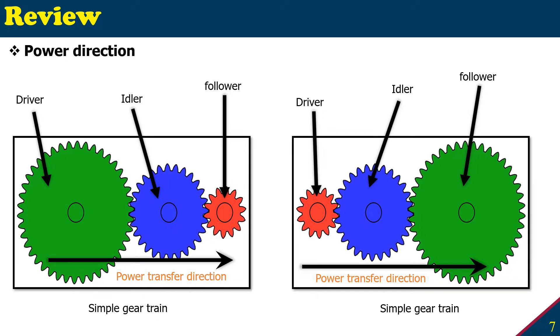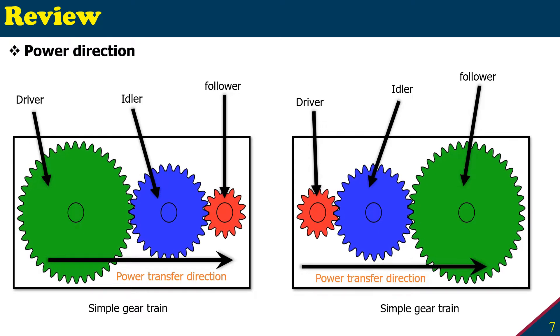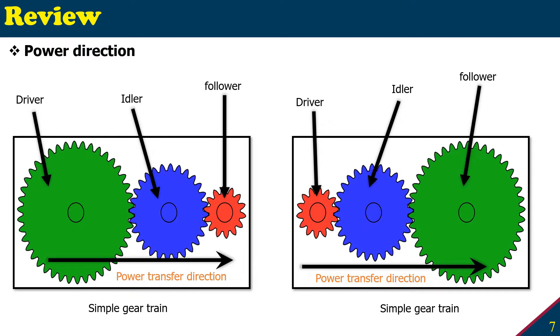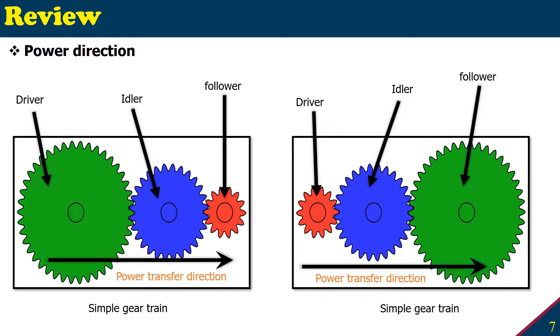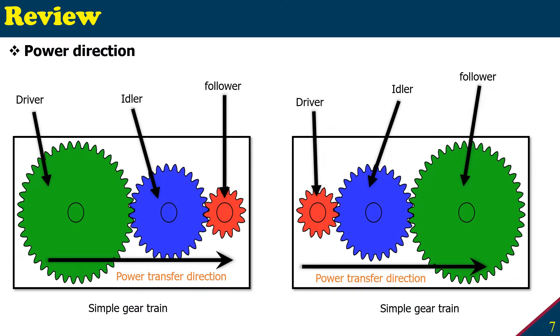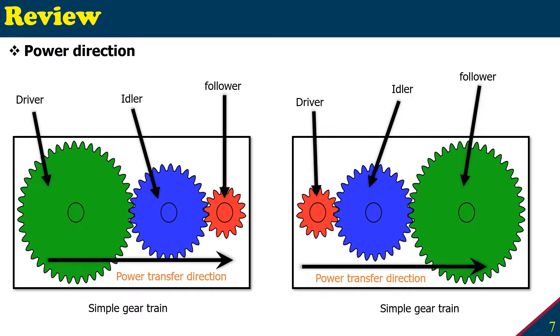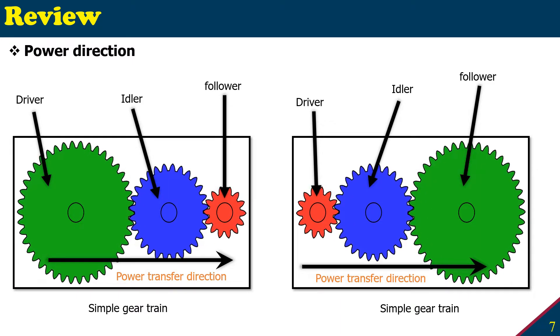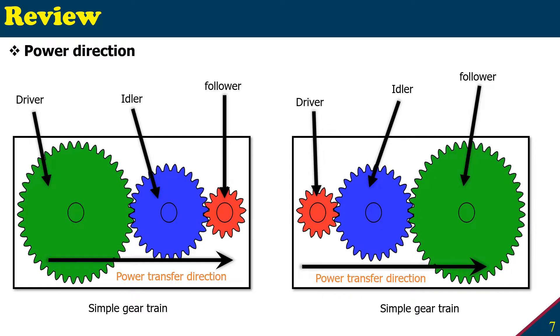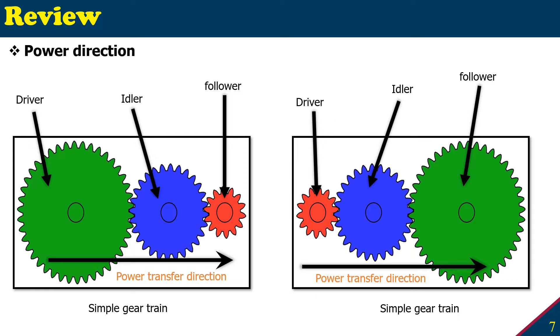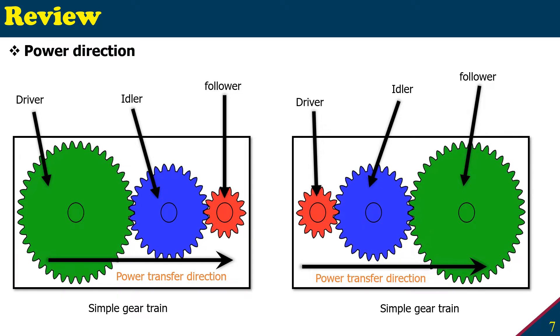The same gears, if I put the red as a driver and put my load on the follower, then the power transfer direction completely changes. So now the power transfer direction would be from red to blue and blue to green. The power transfer direction depends on which one is the driver, which one is the follower, and it follows from driver to follower.